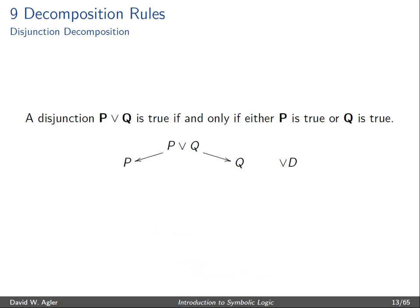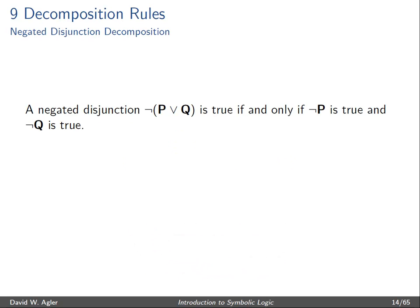A negated disjunction by contrast is true if and only if not P is true and not Q is true. So this gives us one scenario under which the negated disjunction, not PVQ, is true — that is, not PVQ is true if and only if not P is true and not Q is true.